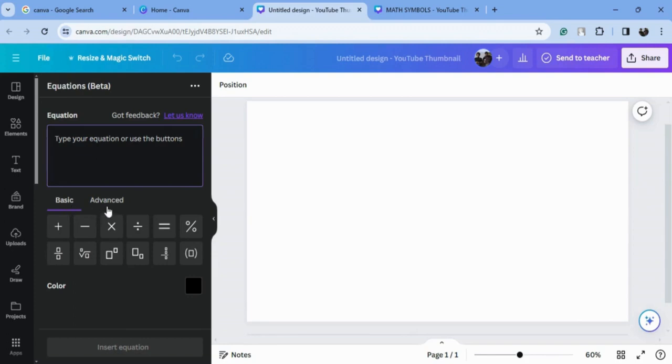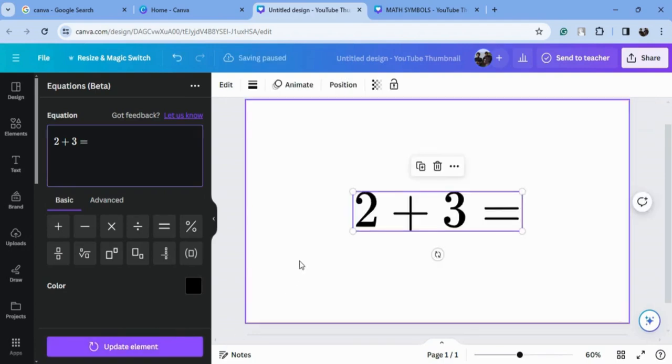First, we will see the basic symbols like plus, minus, multiply, and so on. If I type here 2 plus 3, it equals—you can insert this to your document.